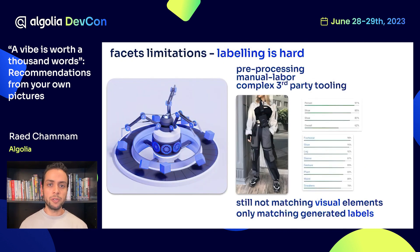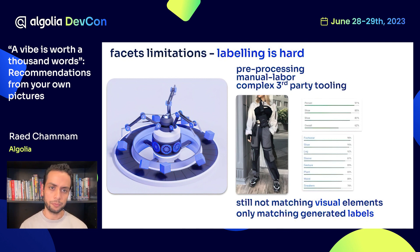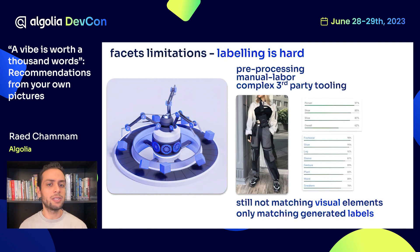This issue boils down to the fact that labeling is really hard work. Traditionally, labeling requires you to pre-process your data before you can even properly show it to your users. If your marketplace, for example, this could be done manually by your sellers, which results in long forms, inconsistent data, and a lot of friction. You could attempt to automate it by generating labels programmatically through computer vision software, usually offered as an extra expensive and complicated service by big cloud providers.